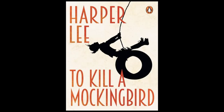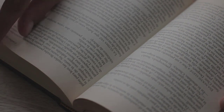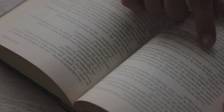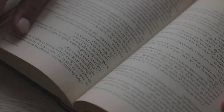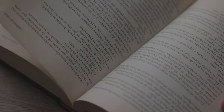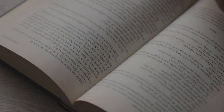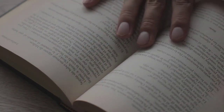Atticus Finch, a principled and compassionate lawyer, is appointed to defend Tom Robinson, a black man accused of raping a white woman, Mayella Ewell. Despite the evidence pointing to Tom's innocence, the deeply ingrained prejudice of the town leads to an unjust trial, and Tom is convicted.